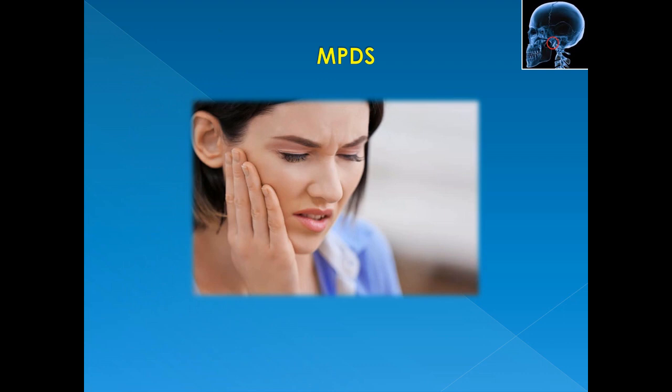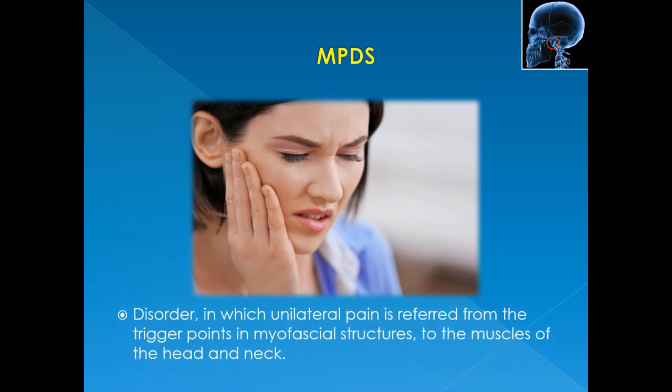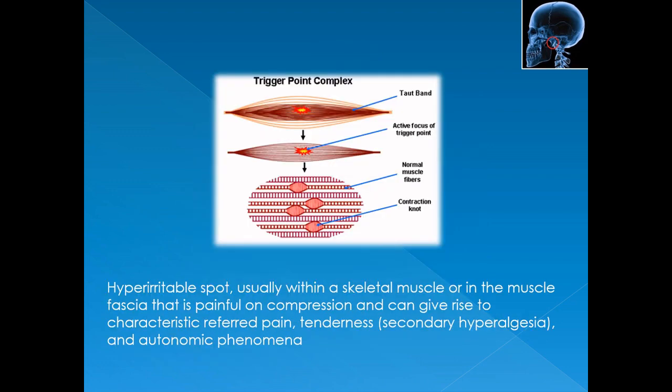MPDS, or myofascial pain dysfunction syndrome, is the most commonly seen condition among temporomandibular disorders. It is a disorder in which unilateral pain is referred from trigger points in the myofascial structures to the muscles of the head and neck. These trigger points are tight, highly irritable points in a taut band of muscle, and there is referred pain away from the trigger point. Here you can see the trigger point complex, which is a hyper-irritable spot usually within a skeletal muscle.